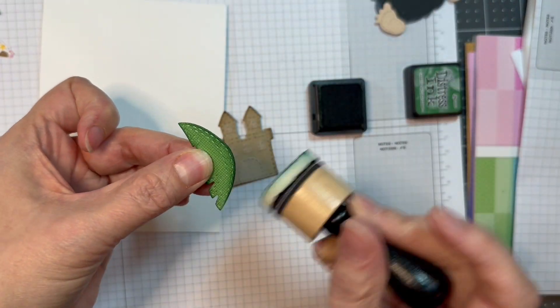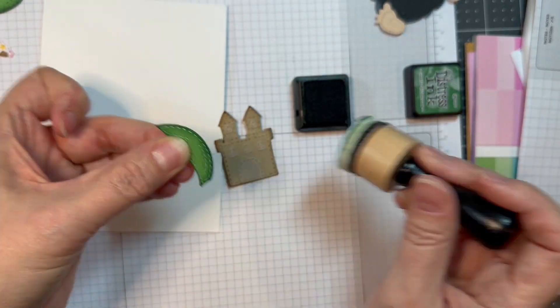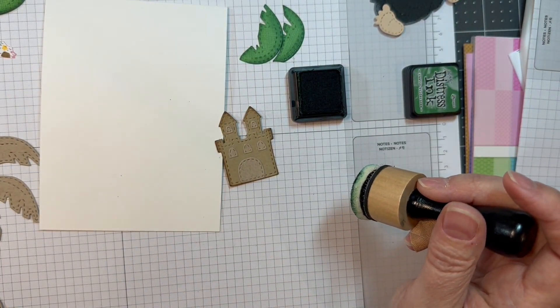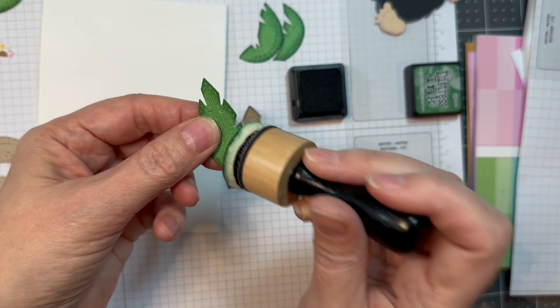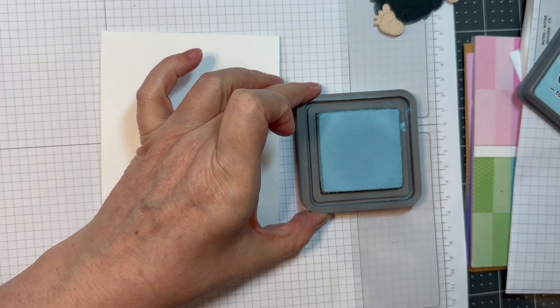I've got the leaves all cut out of Gingham Linen from Doodlebug on the linen side and I'm inking around the edges with Rustic Wilderness Distress Ink just to add a little bit of definition. I find it makes a big difference.